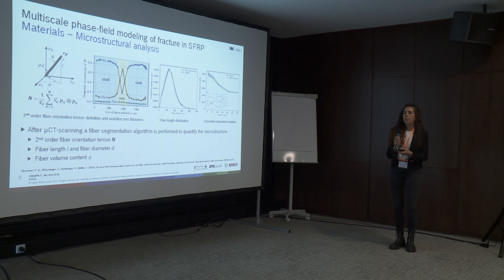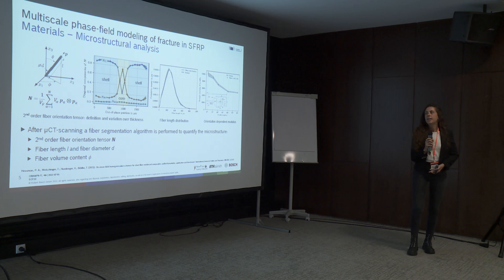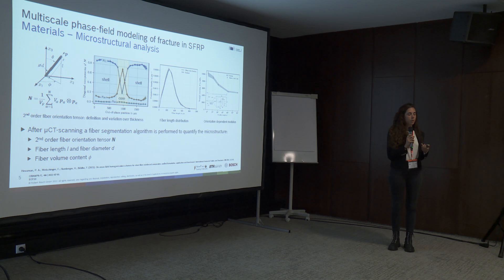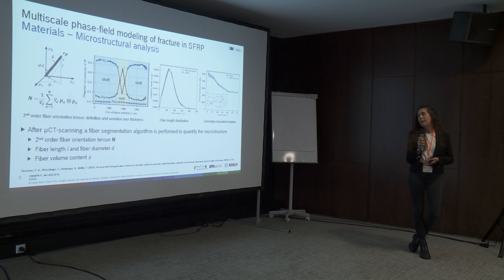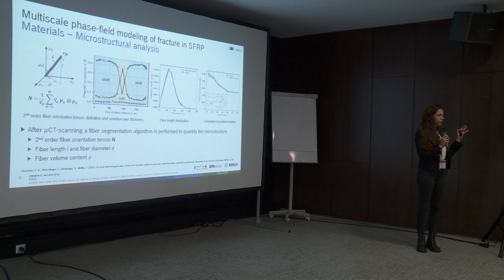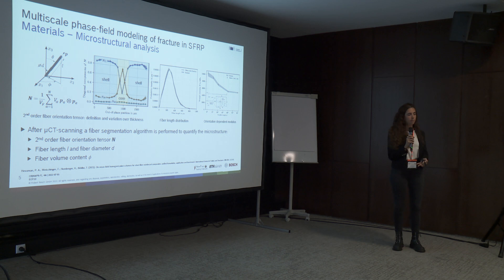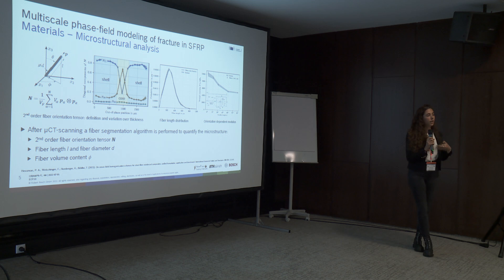The key point of this modeling is the microstructure, so we need to take it into account. To characterize the microstructure, we first perform micro CT scans on all the materials. Once we have the CT images, we perform a segmentation algorithm which gets rid of the gray scales and transforms them into binary values. We then apply an erosion-type algorithm so we can isolate the fibers themselves.